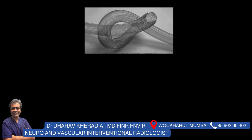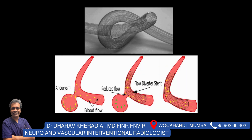What is a flow diverter? It is nothing but a special stent with a higher metal density. You know, when a heart attack comes, cardiologists put a stent inside the coronary blood vessel, or for any blockages elsewhere in the body we put a stent there. But those stents are more porous compared to a flow diverter stent — the flow diverter stent has much higher metal density, so it will divert flow away from the aneurysm.